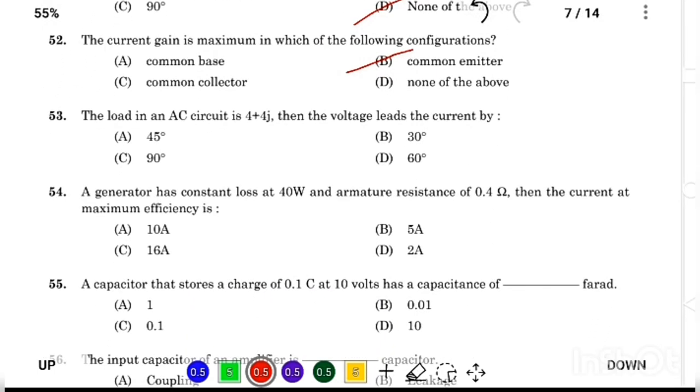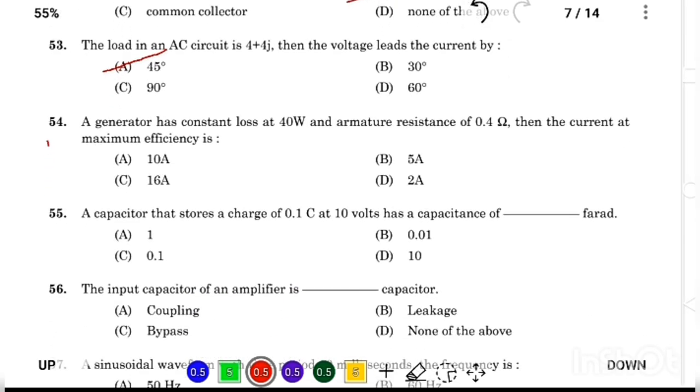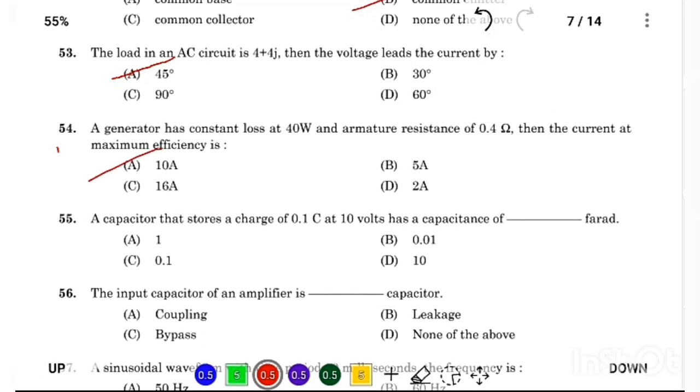The load in an AC circuit is 4 plus 4J, then the voltage leads the current by Answer Option A, 45 degrees. A generator has constant loss of 40W and an armature resistance of 0.4 ohm, then the current at maximum efficiency is Answer Option A, 10 ampere.